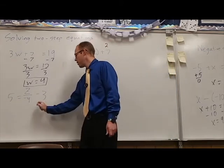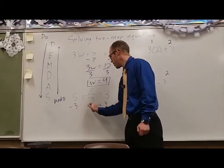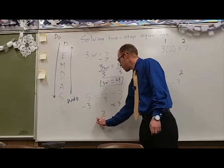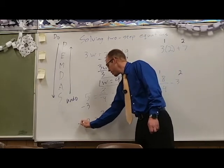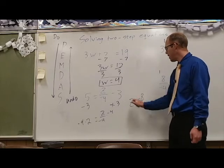All right, let's do that over here. That means we need to add the three first. That will give us z divided by negative four over here, and two over there. Let's multiply by that negative four on both sides, and we get z equals negative eight.